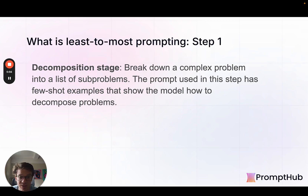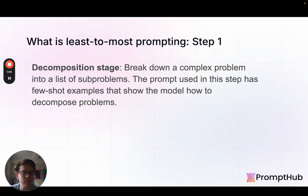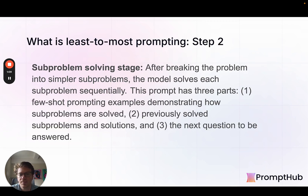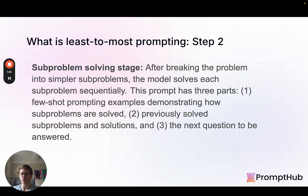The prompt used to decompose the problem into subproblems usually has a few examples showing the model: here are some similar problems and the decomposed steps for those problems — now do this next one. Then it starts to sequentially solve those smaller problems. A few-shot examples are usually included here — the previously solved subproblems and solutions — and then the next subproblem to be answered. You could do this in a single prompt and have all the subproblems solved at once, or you can make a different request for each subproblem and then append them.